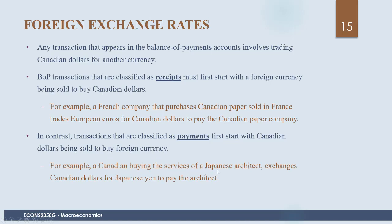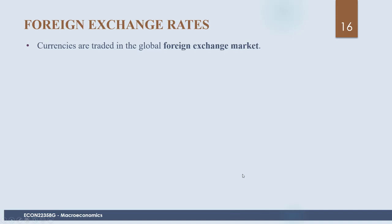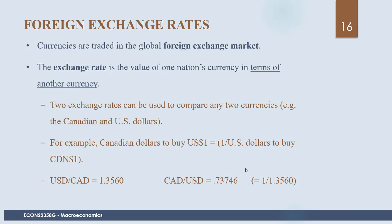Currencies are traded in the global foreign exchange market. The exchange rate is the value of one nation's currency in terms of another, and it can be expressed in different ways. For example, one US dollar equals 1.356 Canadian dollars. This expression tells us how much Canadian dollars are needed to buy one US dollar — that is, how much domestic currency we need to buy foreign currency.